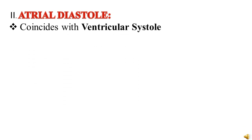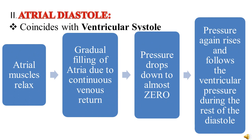The next phase is atrial diastole. After atrial systole, atrial diastole occurs, lasting about 0.7 seconds, coinciding with ventricular contraction. During atrial diastole, there is relaxation of the atrial muscles. As most blood has already flowed into the ventricles, gradual filling of the atria occurs due to continuous venous return, and the pressure drops down almost to 0. After that the pressure again rises, following ventricular pressure during the rest of atrial diastole. The pressure drop to almost 0 is due to the opening of the atrioventricular valves.